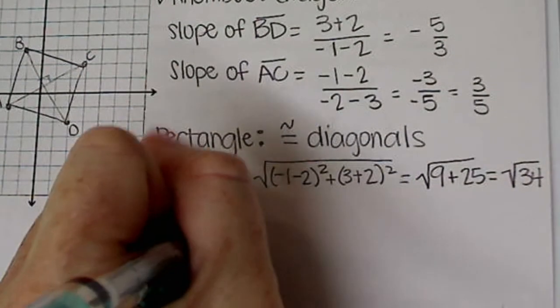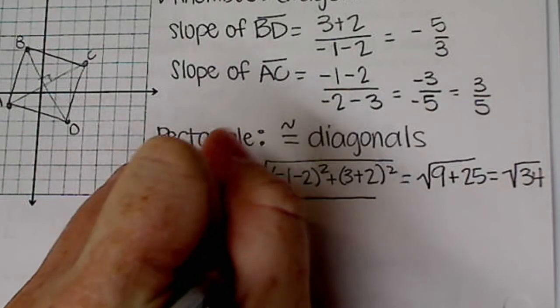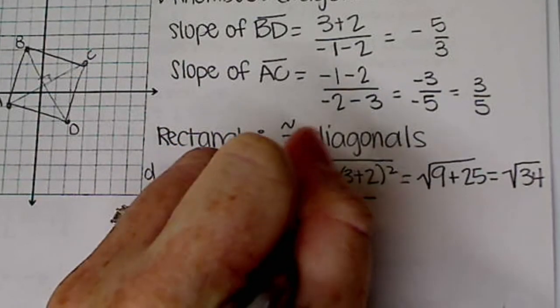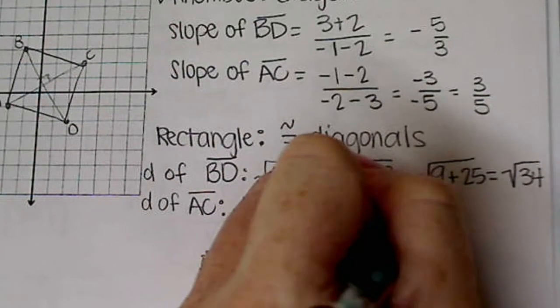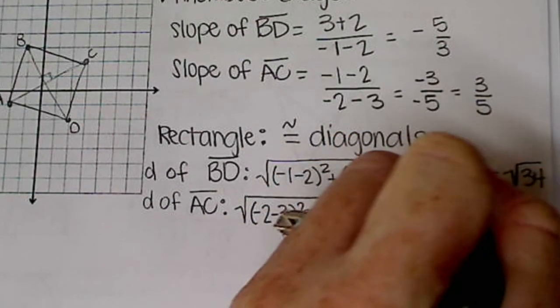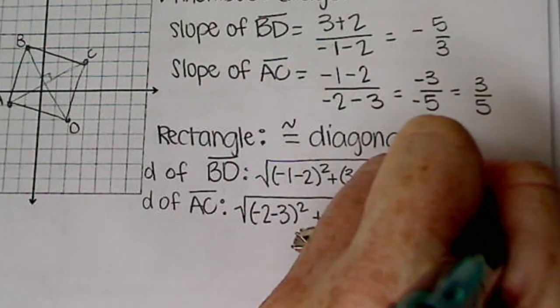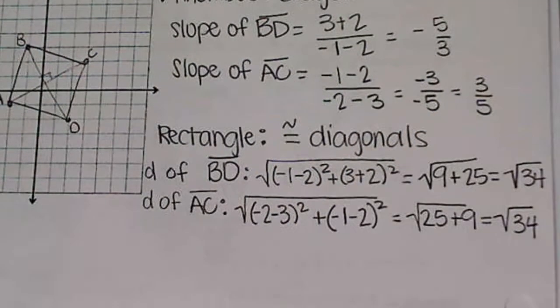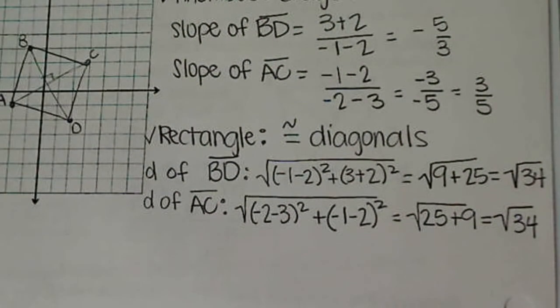Let's see if the distance of AC is also square root of thirty-four. Same formula. Let's plug it in. And we get square root of twenty-five plus nine, which, hey, look at that same number. So that means our parallelogram is also a rectangle.